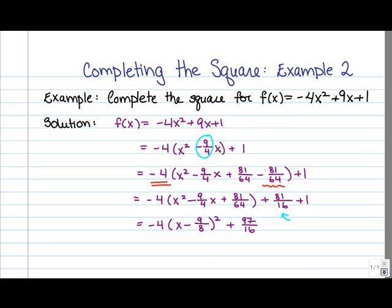Now we're done, but remember that you can always check your work by expanding, so multiplying (x - 9/8) times (x - 9/8) times -4 and adding 97/16. It's a bit messy here because we've got the fractions, but either way the point is if you go ahead and expand, what you'll end up with is the function we had in the original question. So it's very easy to check your work when you complete the square, because upon expanding your final answer you should end up with what you started with originally.